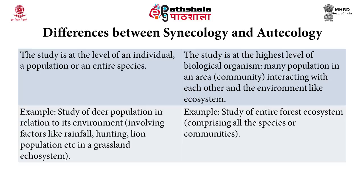An example of autoecology is the study of a deer population in relation to its environment, involving factors like rainfall, hunting, lion population, etc., in a grassland ecosystem. An example of synecology is the study of the entire forest ecosystem comprising all the species of the communities.